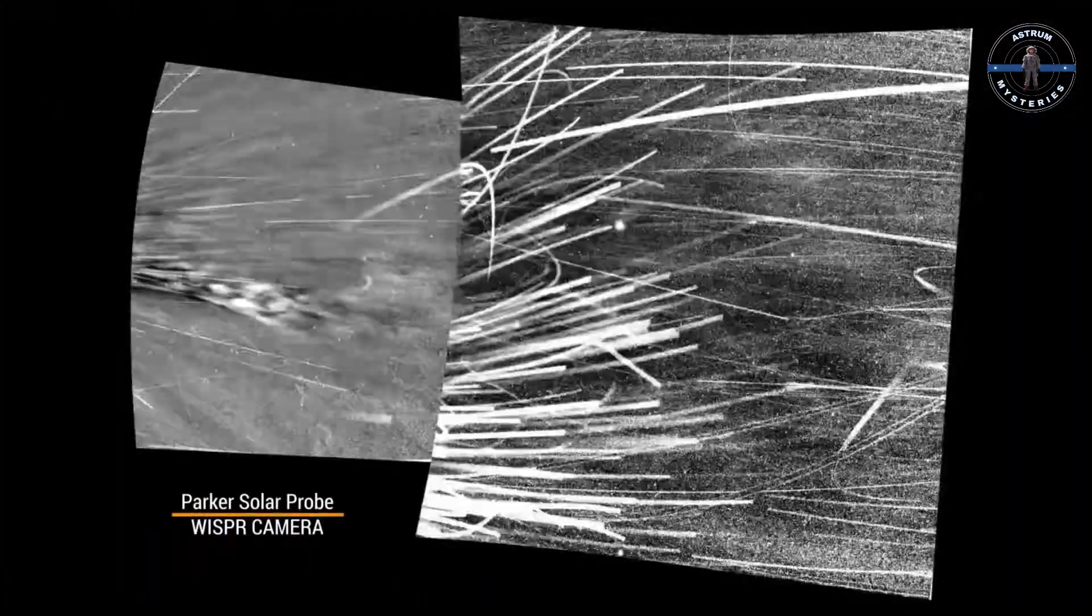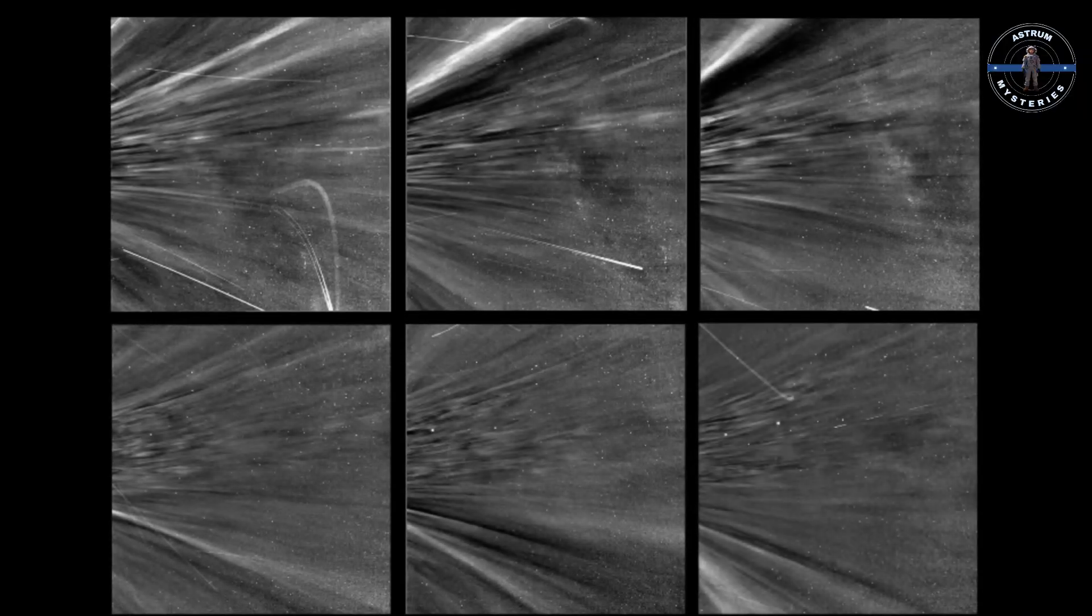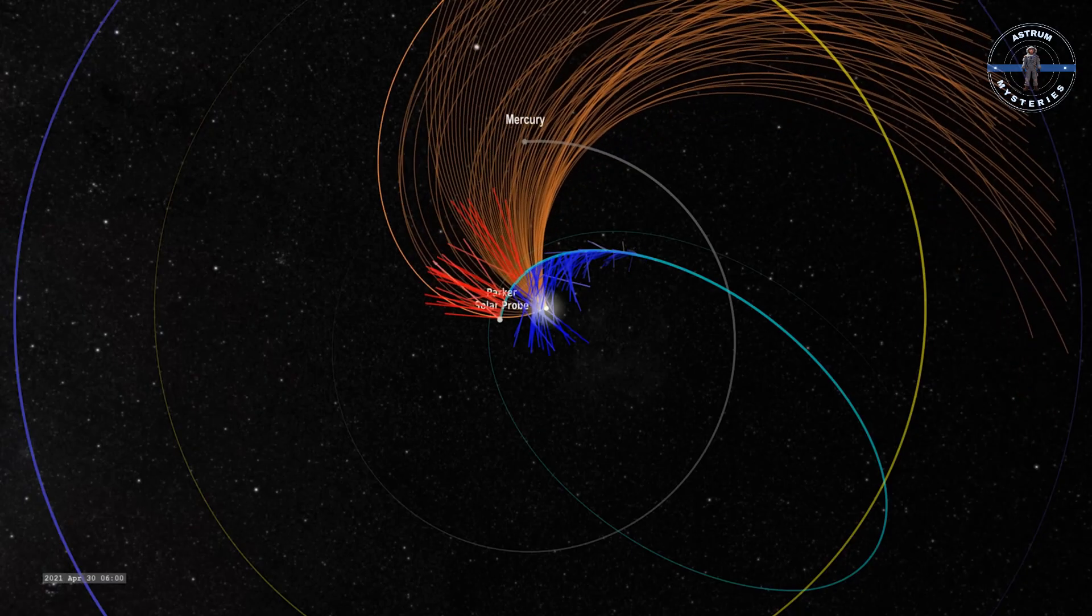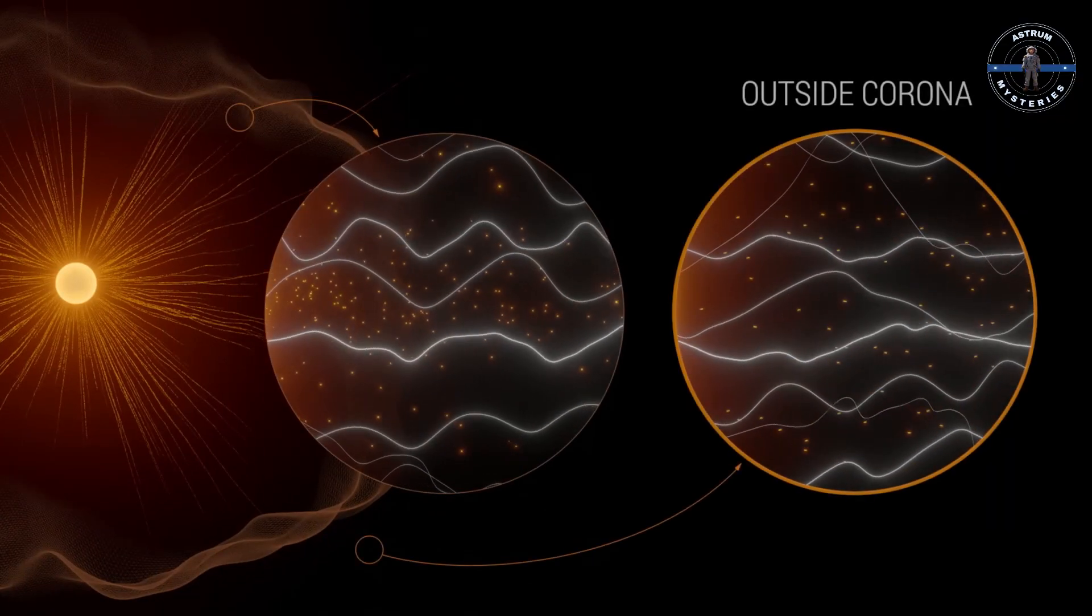But speed isn't its only claim to fame. In 2021, the probe achieved the unthinkable: it entered the sun's corona, a region hotter than the surface itself. Scientists were stunned. This wasn't just a milestone, it was a leap into the unknown.